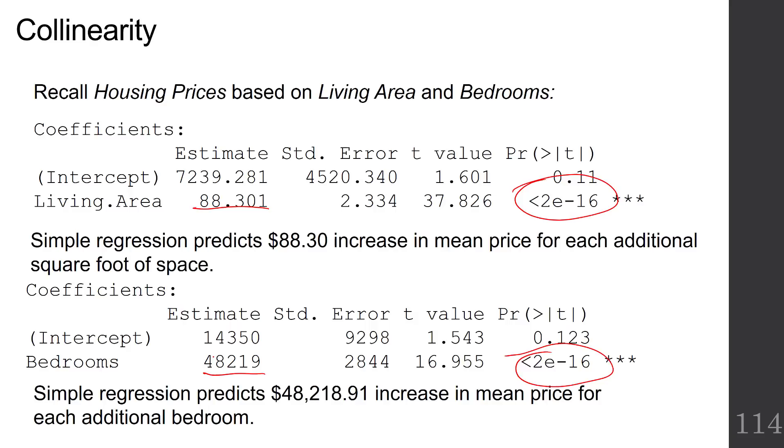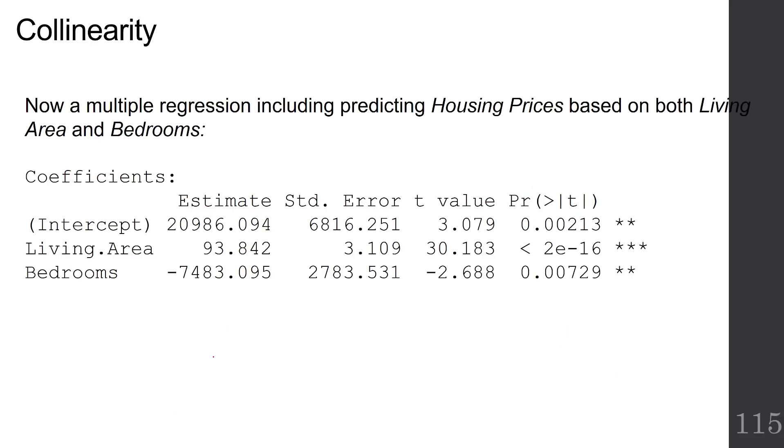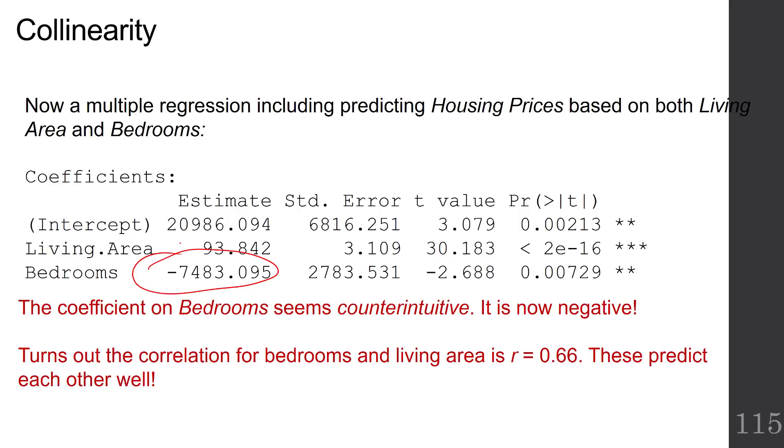Both of these are positive relationships. But then when we incorporated both of these predictors into one model, we got a counterintuitive sign on bedrooms. It's now negative. It turns out that the correlation between the two predictors themselves, bedrooms and living area, is positive and moderate, 0.66. So these end up predicting each other well. Some of the information in the number of bedrooms is contained in living area and vice versa.